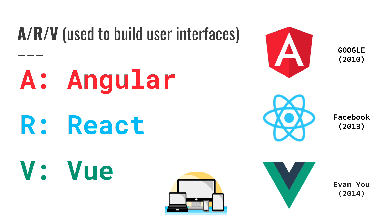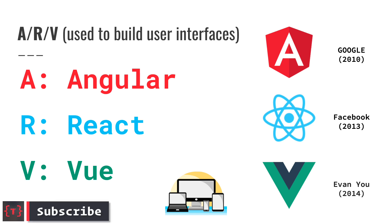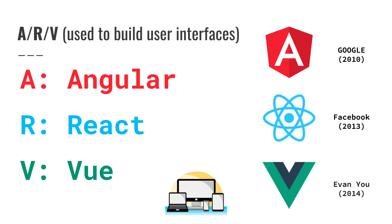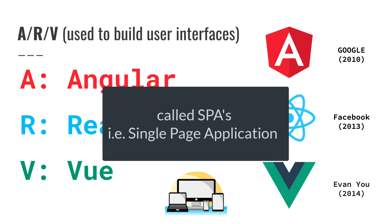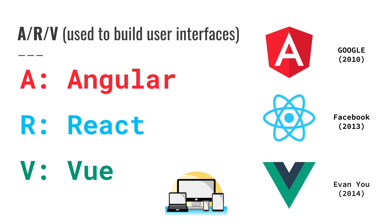Now let's see what A, R, and V mean. A stands for Angular, which was developed by Google in 2010. R stands for React, which was developed by Facebook in 2013. And V stands for Vue.js, which was developed by Evan You, who was an ex-Google employee. These three are individually used to build user interfaces.